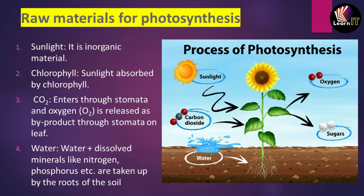From the diagram we can understand the four basic things, and in the last portion there is sugar — when these four materials combine, they form a kind of sugar or carbohydrate utilized by the plant or other organisms. Chlorophyll helps in the absorption of sunlight and converts it into energy. Carbon dioxide enters through the stomata and releases oxygen as a by-product. Water, along with materials like nitrogen and phosphorus, is taken up from the roots from the soil.